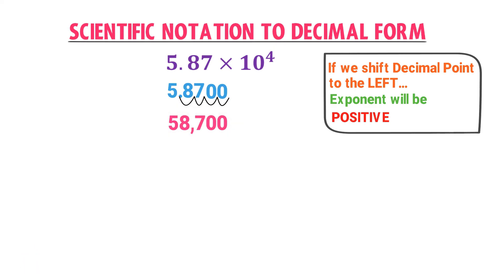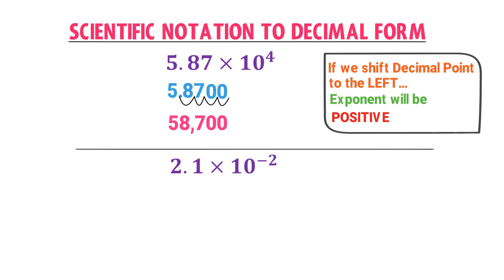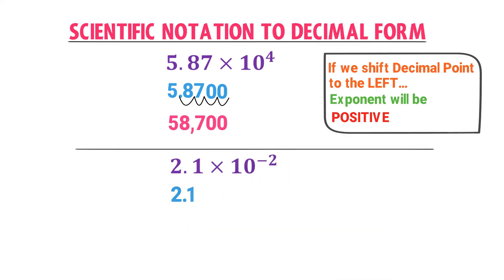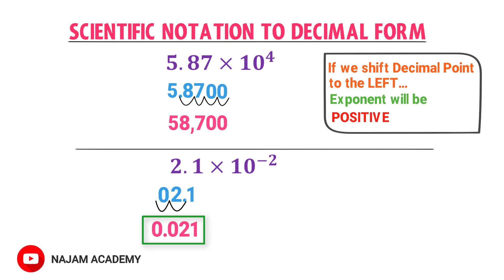One last example: 2.1 × 10⁻². The exponent is negative, meaning the decimal point was moved to the right. Carry the decimal point two places back to the left: one and two. Put zeros in any empty spaces. We get 0.021. So 2.1 × 10⁻² converts to 0.021 in decimal form.